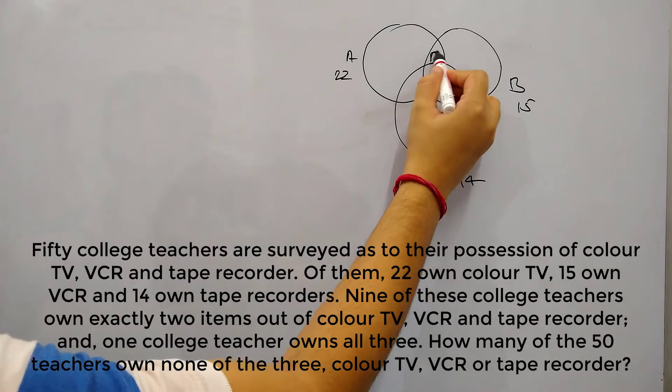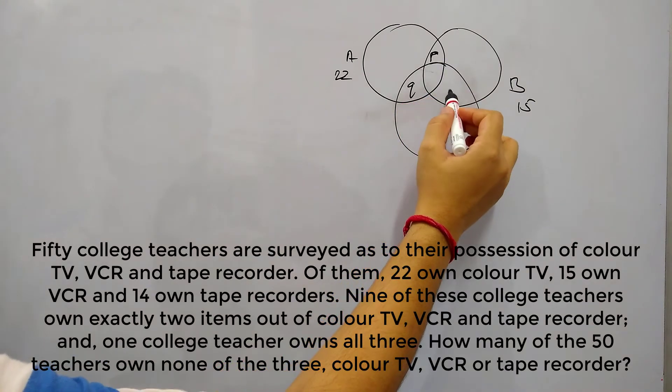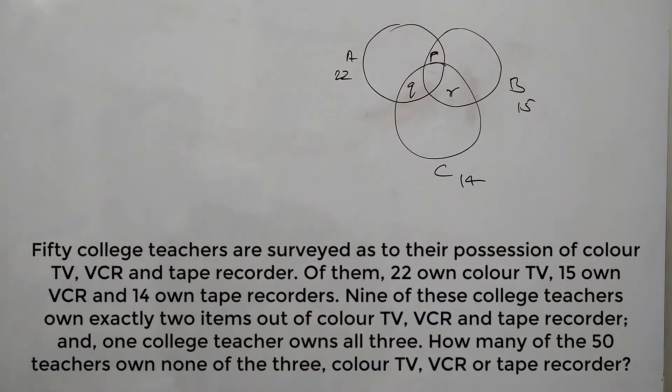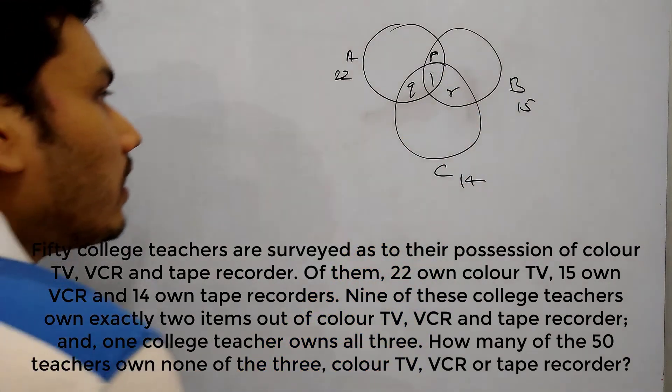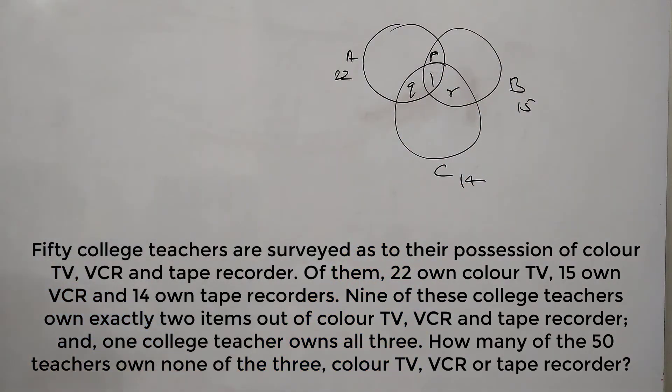So here we can say it's P, Q and R. The sum of P, Q, R is given as 9 and teachers who own exactly 3 items is 1. So this is the case given here and if you know the formula you can get the answer within seconds.